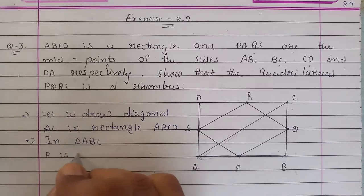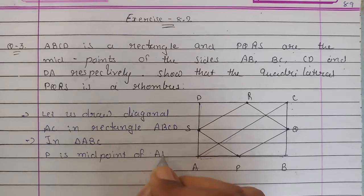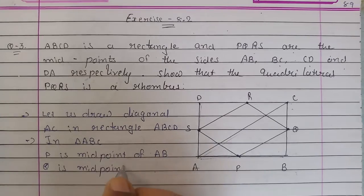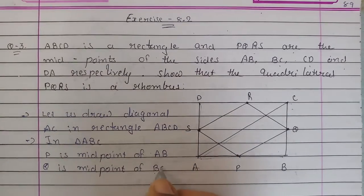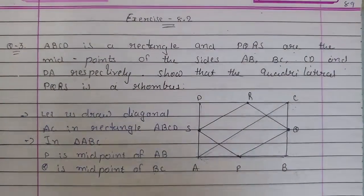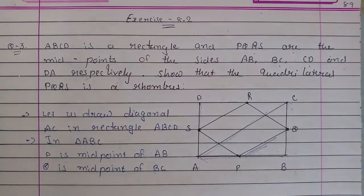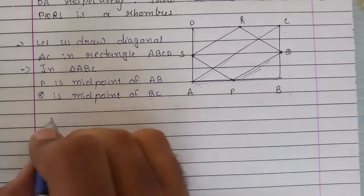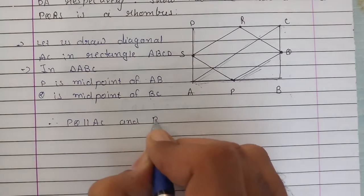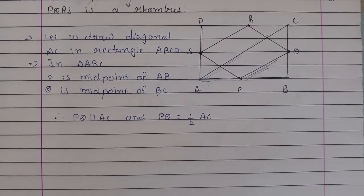In triangle ABC, P is midpoint of AB and Q is midpoint of BC. This means PQ which is third side is parallel and third side is half. That means PQ is parallel to AC and PQ is equal to half of AC.